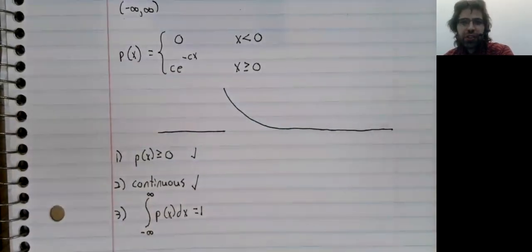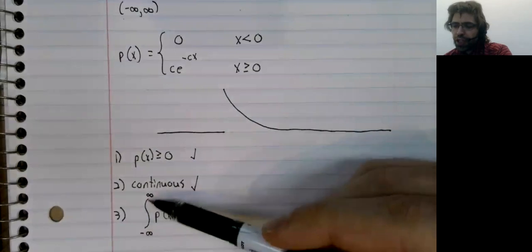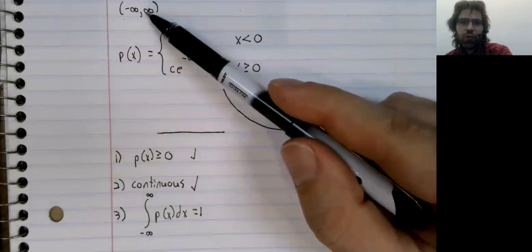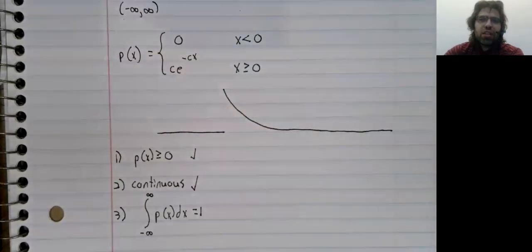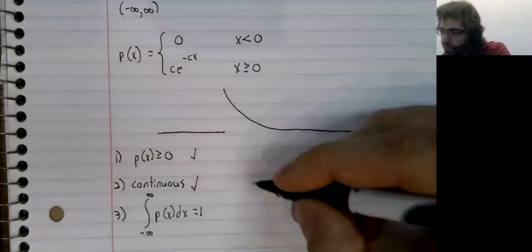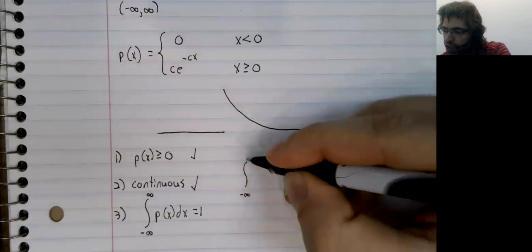That's going to require slightly more work. We're integrating from negative infinity to positive infinity, because that's the interval this probability density function is defined on, by definition.